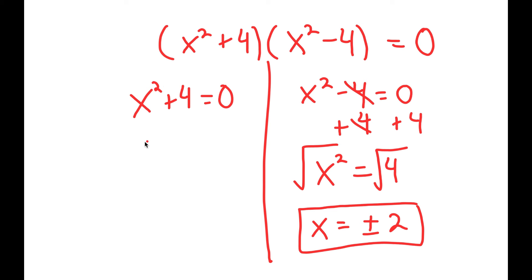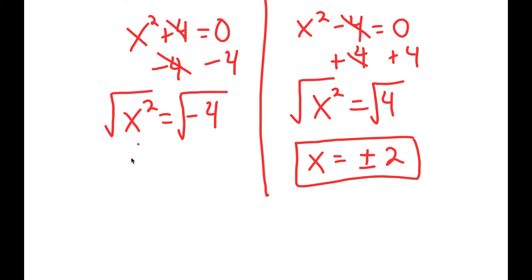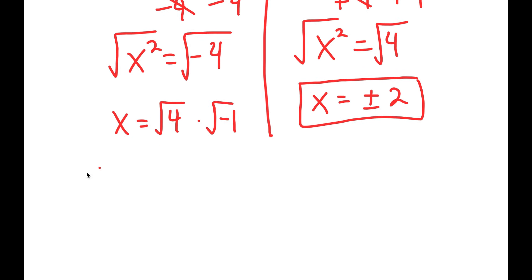Now for the other equation, x squared plus 4 equals 0. To solve this, I'm going to subtract 4 on both sides, so I get x squared is equal to negative 4. Taking the square root on both sides, the square root of x squared is again x. The square root of negative 4 can be rewritten as the square root of 4 times the square root of negative 1. The square root of negative 1 is equal to the imaginary number i, so I get x is equal to positive or negative 2i.